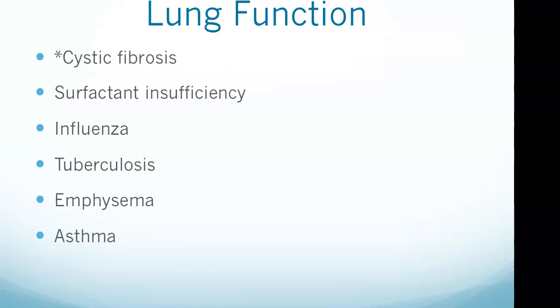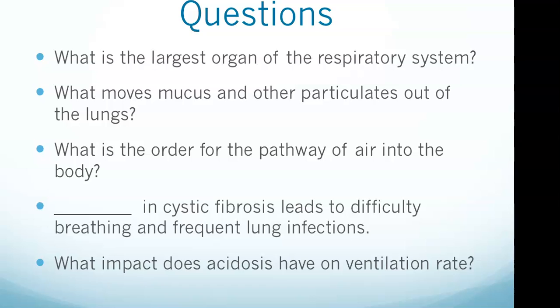In cystic fibrosis, thick mucus leads to difficulty breathing and frequent lung infections. The breathing difficulty leads to decreased efficiency in gas exchange. Due to breathing being more difficult, the respiratory system must work harder to bring in air — carbon dioxide and lactic acid are released, leading to a drop in pH. So the answer to that question is: thick mucus in cystic fibrosis leads to difficulty breathing and frequent lung infections.